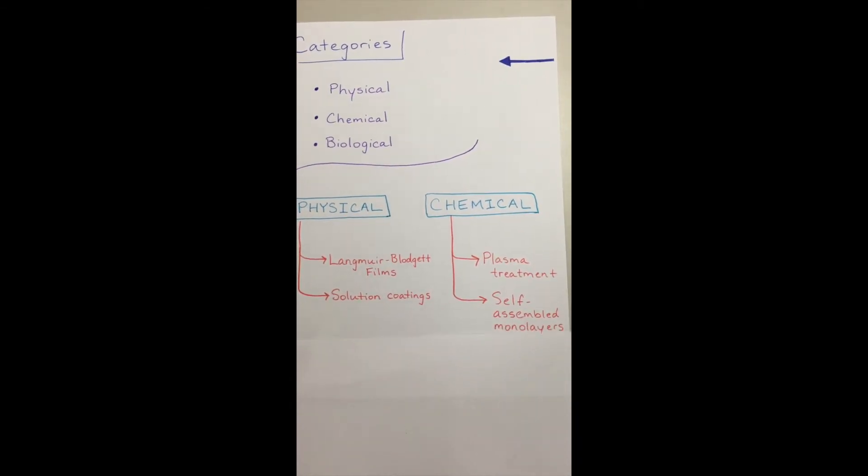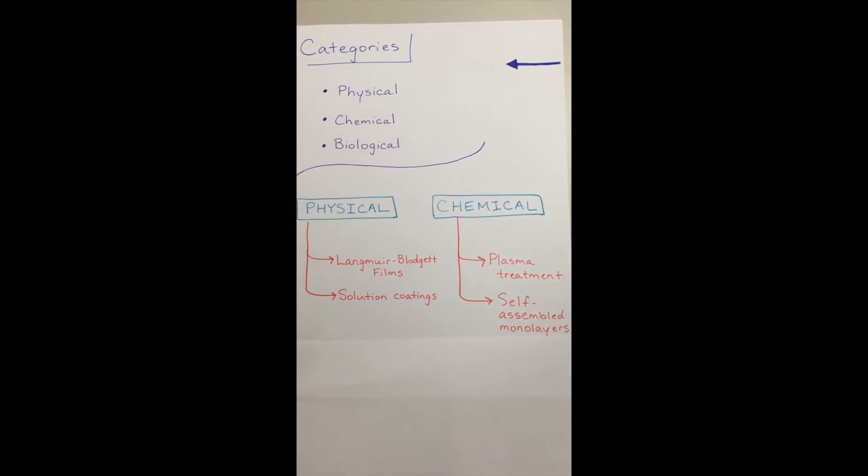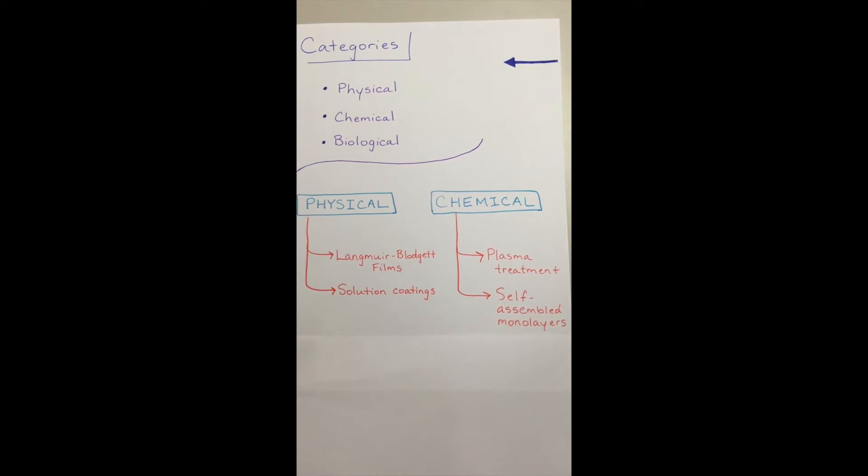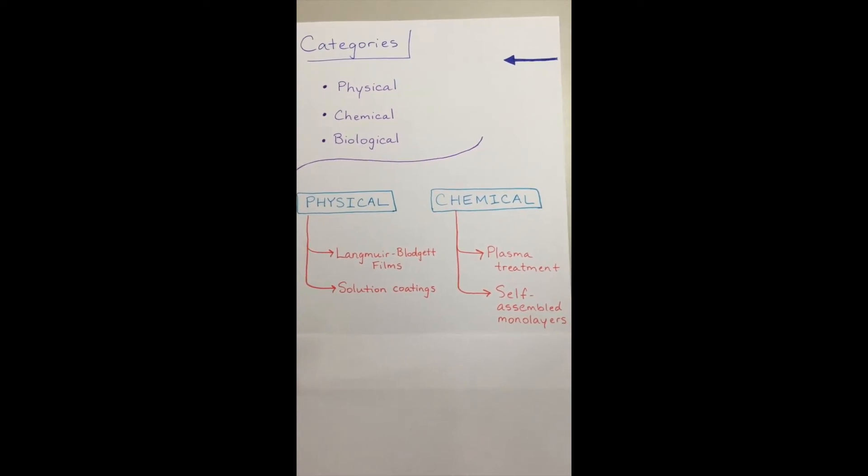There will be four main modifications that we are going to explore. We will first explore two chemical ones: plasma treatment and self-assembled monolayers. Then, we will explore two physical ones: Langmuir Blodgett films and solution coatings.